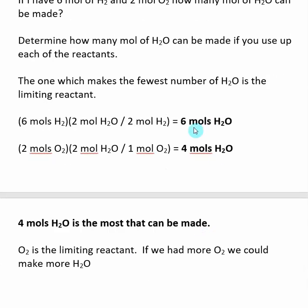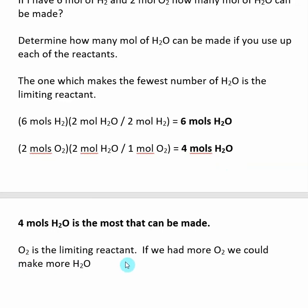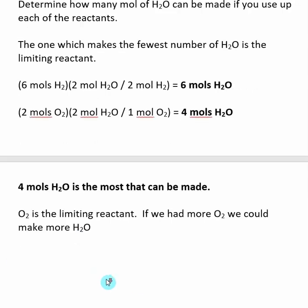I compare the two results: six moles from H₂ versus four moles from O₂. Four moles is the smaller amount, so O₂ is the limiting reactant, and the most I can make during this reaction is four moles of H₂O. O₂ is limiting the amount of product — if we had more oxygen, we could make more H₂O.